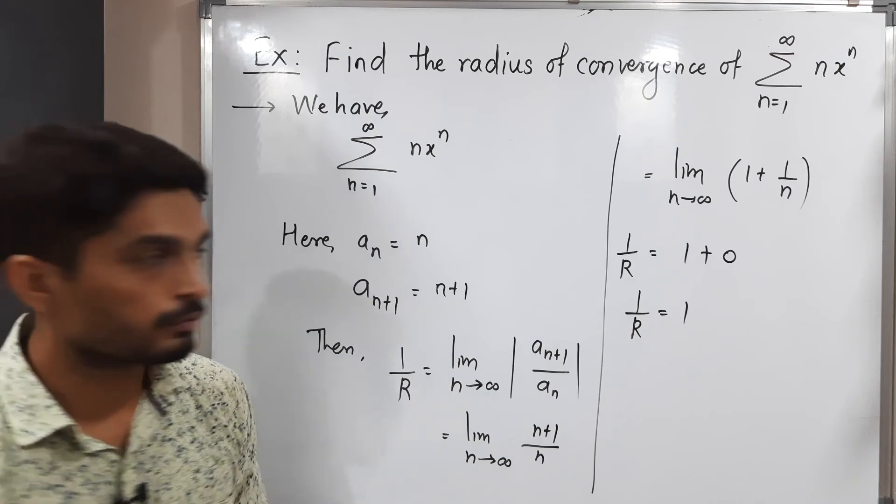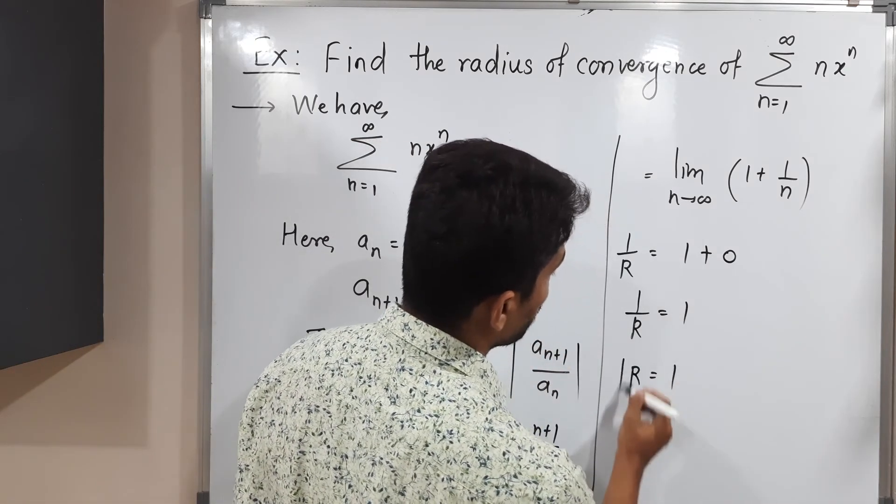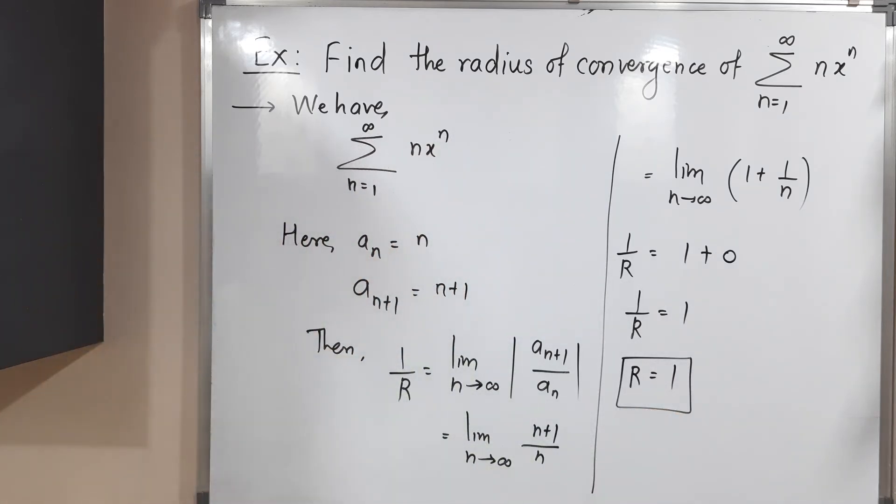So we want R, the radius of convergence. Let us take reciprocal of both sides. So R, the reciprocal of 1 is 1 itself. So that's why the radius of convergence is 1. So make a screenshot of it. Thank you. Bye-bye.